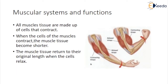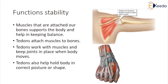Muscular systems and functions: All muscle tissue is made up of cells that contract. When the cells of the muscles contract, the muscle tissue becomes shorter. The muscle tissue returns to its original length when the cells relax. Function — stability: muscles that are attached to bones support the body and help in keeping balance. Tendons attach muscles to bones. Tendons work with muscles and keep joints in place when the body moves. Tendons also help hold the body in the correct posture or shape.